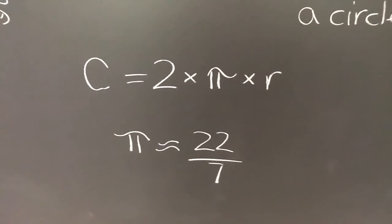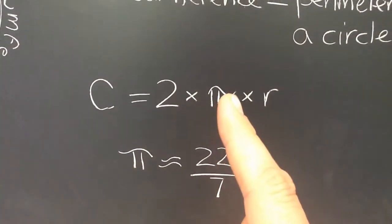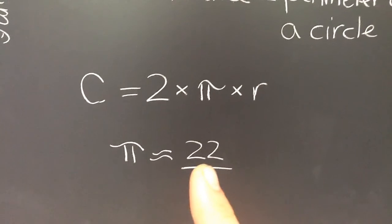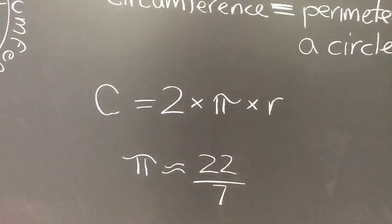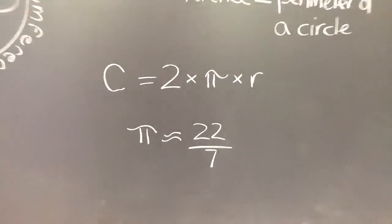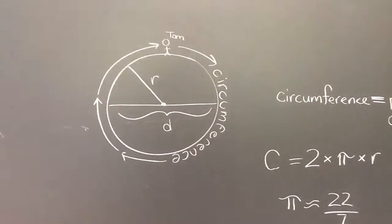If you're in a pinch and you can't remember what pi is, you can use the ratio of 22 divided by 7, and that's a pretty good approximation to pi. So you'll get a pretty good answer if you use that.